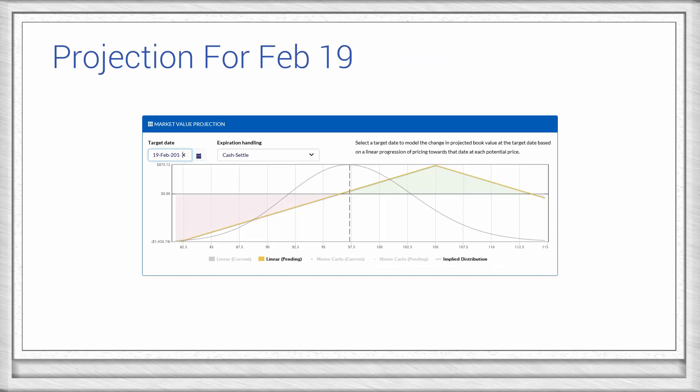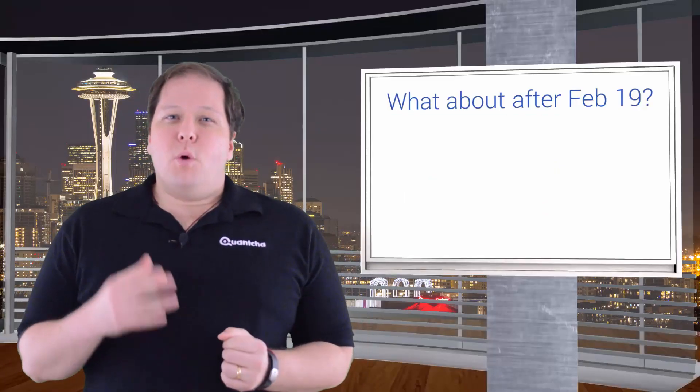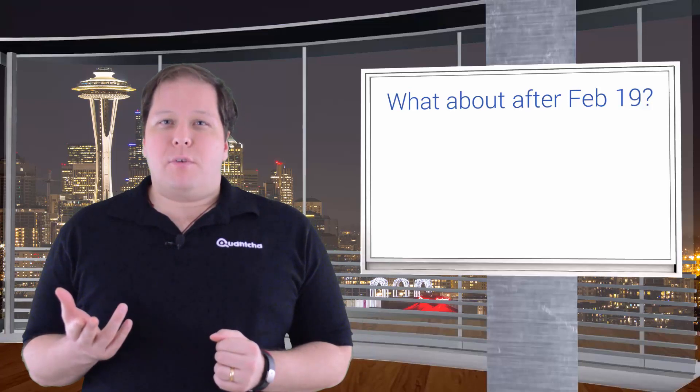If we wanted to model the projected change in the market value of this book at or before expiration, it would be relatively straightforward. Given a range of prices, we would know what the stock and intrinsic value of the options would be, and we could plot that out as shown here. However, what happens when we want to model the book for a future date that's beyond an expiration date for one of the options in our book?